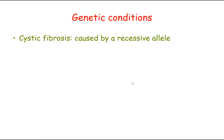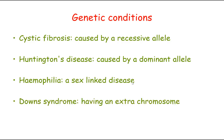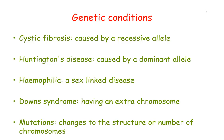It's important to realize that the genetic conditions we've looked at are not all caused by the same thing. Cystic fibrosis is caused by a recessive allele, Huntington's by a dominant allele, haemophilia is a sex-linked disease carried on the X chromosome, and Down syndrome is caused by an entirely extra chromosome. All of these are examples of mutations — changes to the structure or number of chromosomes.